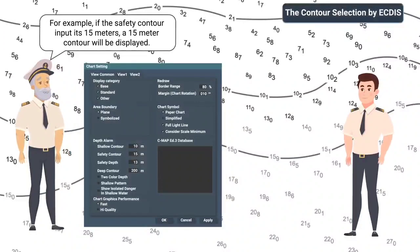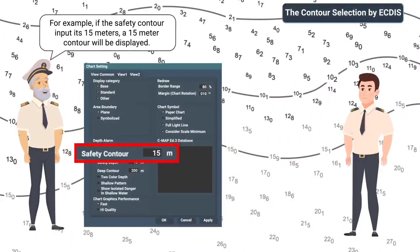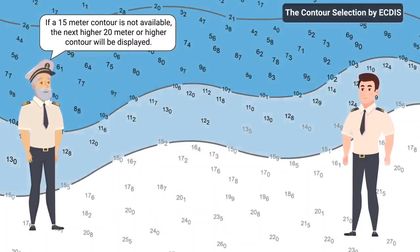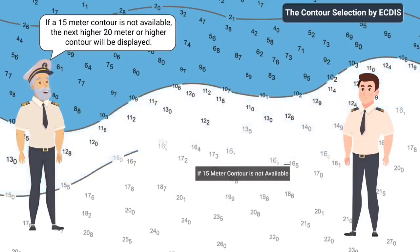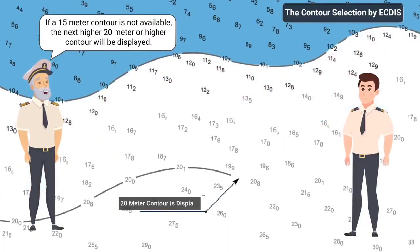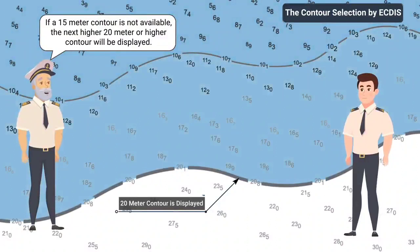For example, if the safety contour input is 15 meters, a 15-meter contour will be displayed. If a 15-meter contour is not available, the next higher 20-meter or higher contour will be displayed.